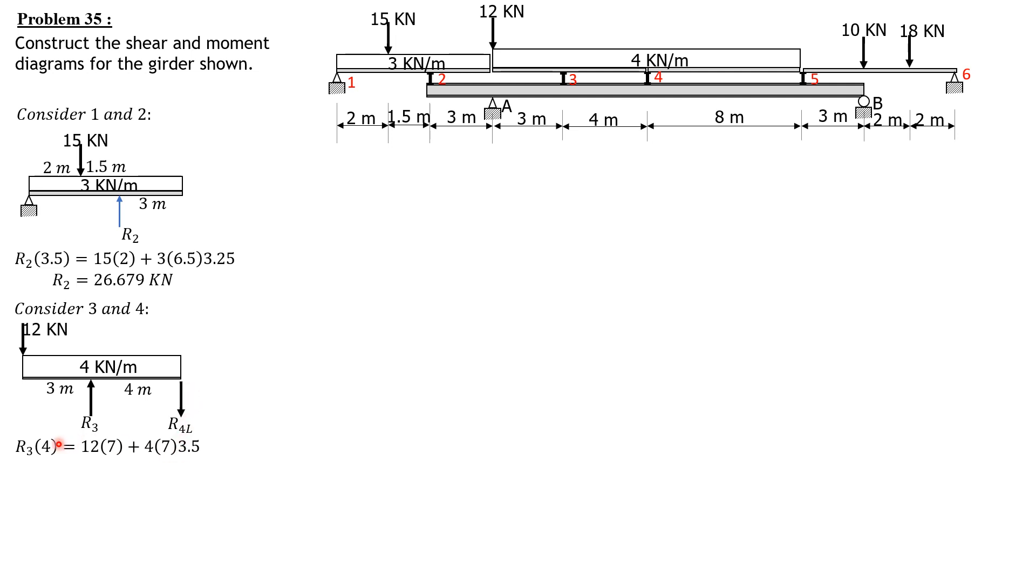Summation of moments about four, just to the left, equals zero, clockwise positive. So R sub 4 times 4 equals 12 times 7 plus 4 times 7 times half of 7, which is 3.5. So R3 is 45.5 kilonewtons, while R4 left, so R4 is 5.5 times 4. Summation of moments about 3 equals zero.